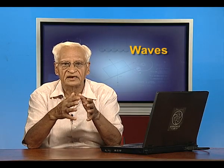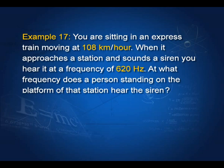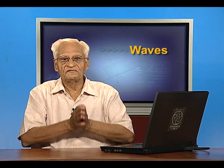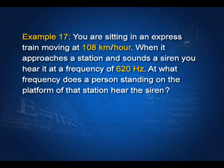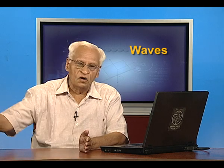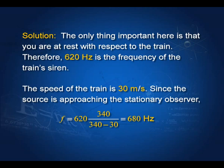You are in an express train moving at 108 km/h (30 m/s) and hear the train's siren at 620 Hz. Since you are at rest relative to the train, the siren's actual frequency is 620 Hz. A person on the platform hears the siren as the train approaches: Vs is negative, so the frequency is 620 times 340 by (340 minus 30) = 680 Hz.